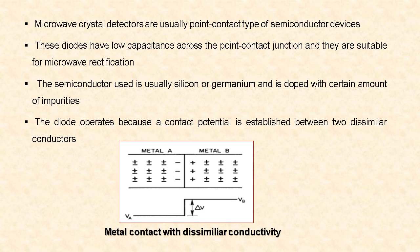The semiconductor is doped with a certain amount of impurities. The diode operates because a contact potential is established between two dissimilar conductors.